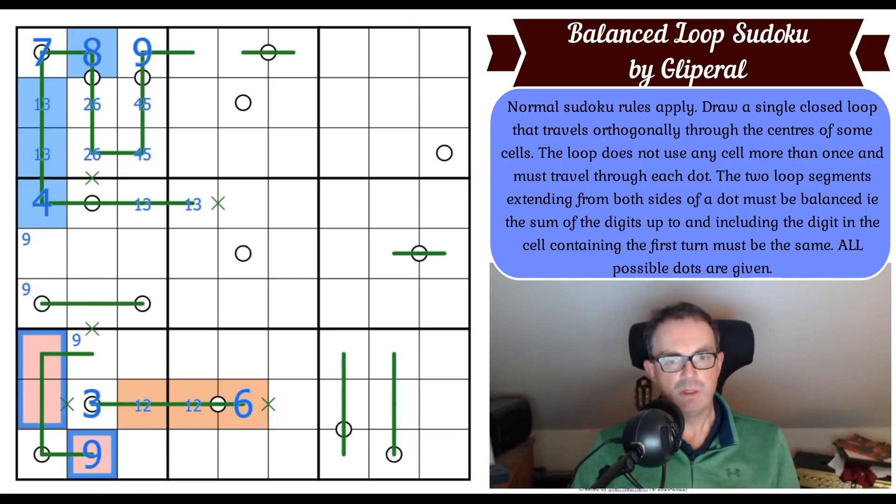Given it cannot work, we can delete all this and prove therefore that this is not the nine in box seven. Once this is not the nine, this is the nine, and we need to remove this loop segment because we don't know whether it does that or not. But we now know that this is the nine.